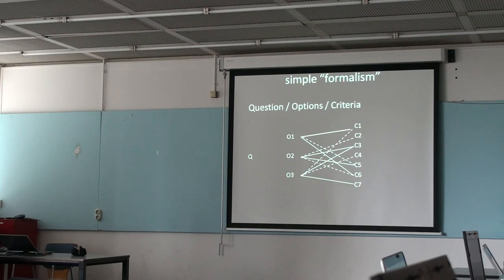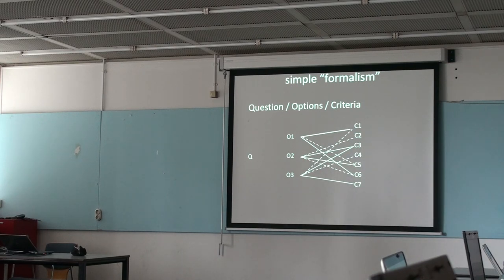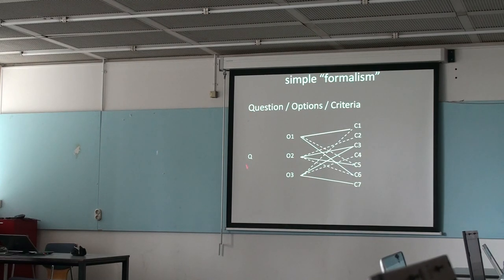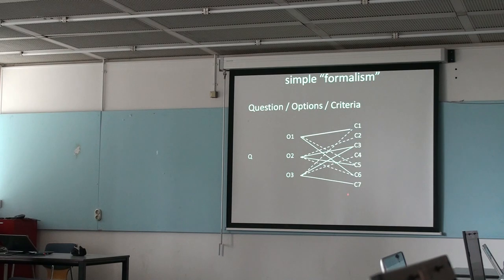I know there are people who use this technique and they are now counting. They say the calculation shows that option 2 is the best. To be honest, I don't care. Somebody is going to make the decision on the answer for question Q1. And this person will decide: okay, I now see what all the different possibilities are that the design team can come up with, and I can see all the criteria. Given all this, I choose option 3.